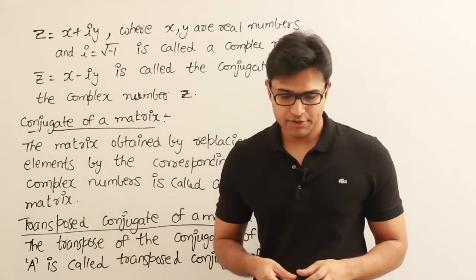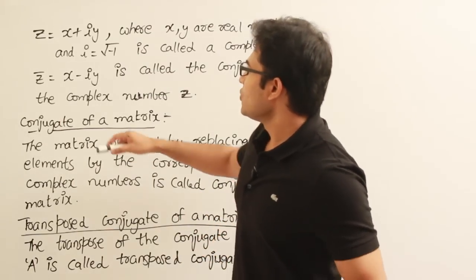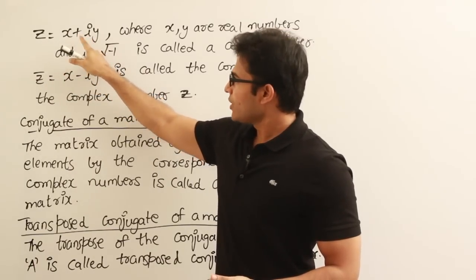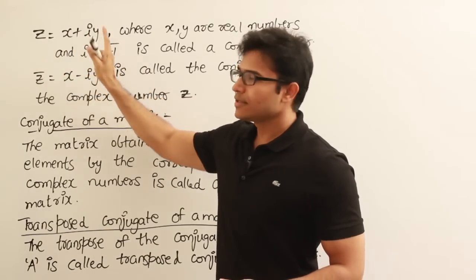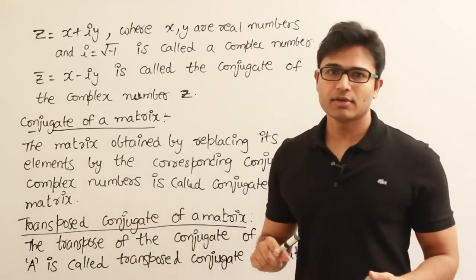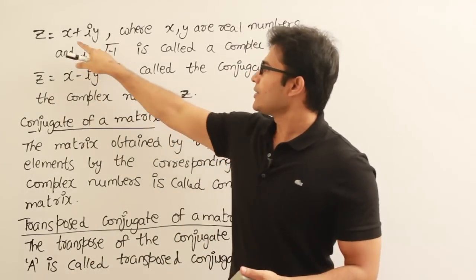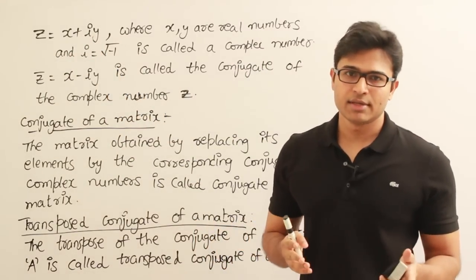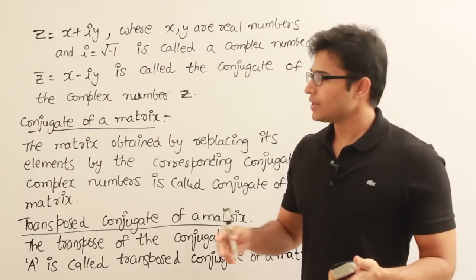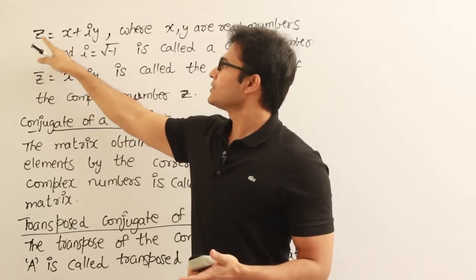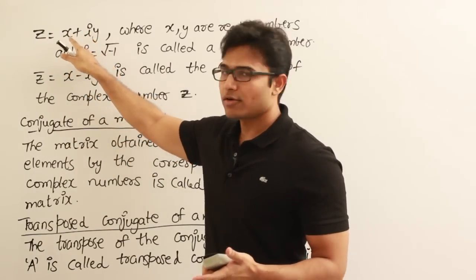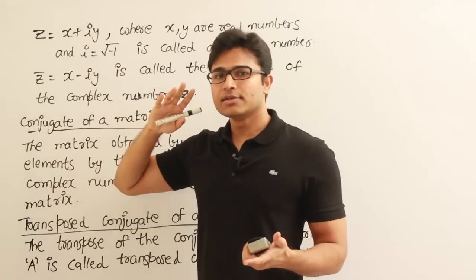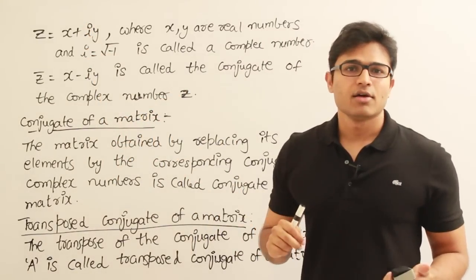I will just give you the definitions here. If you have z as x plus iy, where x and y are real numbers and i is an imaginary number — i is the square root of minus 1 — then such a combination of numbers is generally called a complex number.